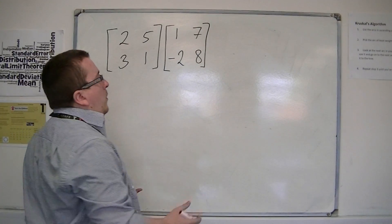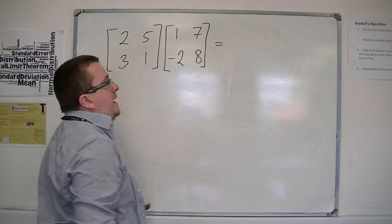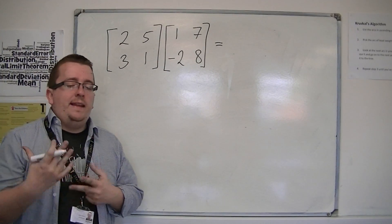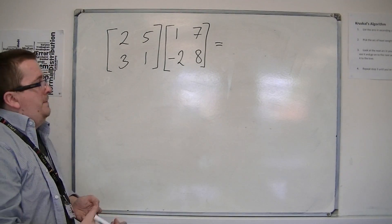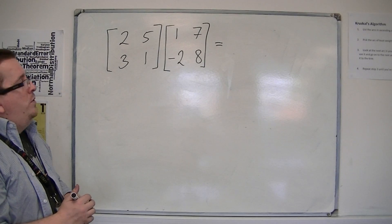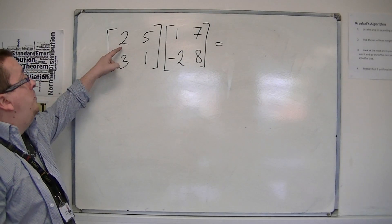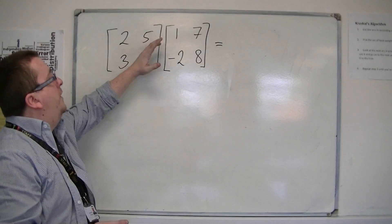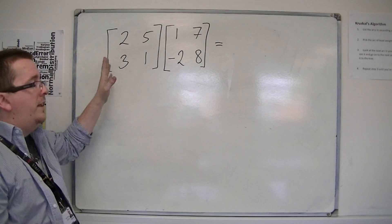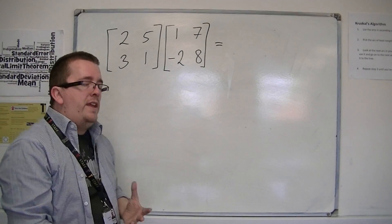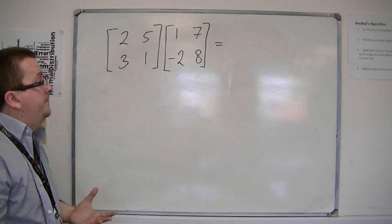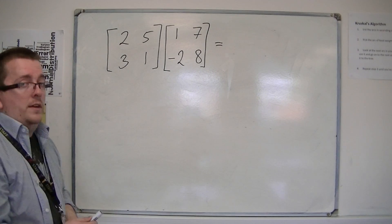Now, it doesn't work in a way really that we would particularly like. So it would be lovely if we could just do 2 times 1 is 2, 5 times 7 is 35. It would be great if we could do that, but we can't.